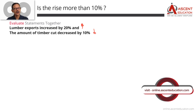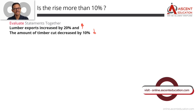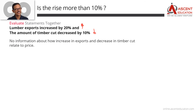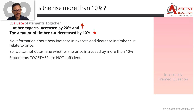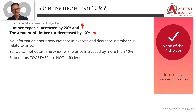However, even combining the two statements, we cannot determine the answer. You cannot assume that an increase in exports or a decrease in timber cut directly tells us the price increase amount. We have no information about how the price relates to both the increase in exports and the decrease in timber cut. So combining them still does not give us a definite answer.